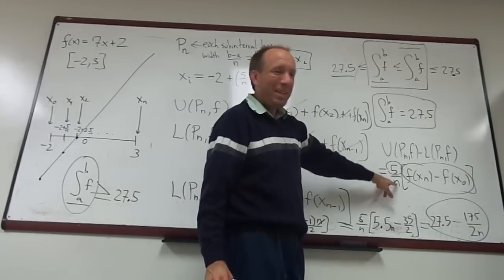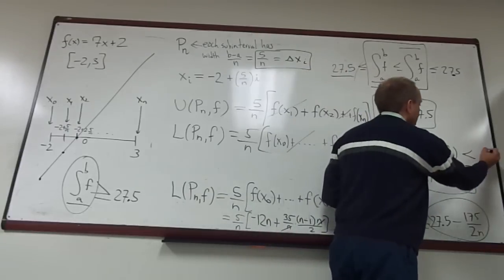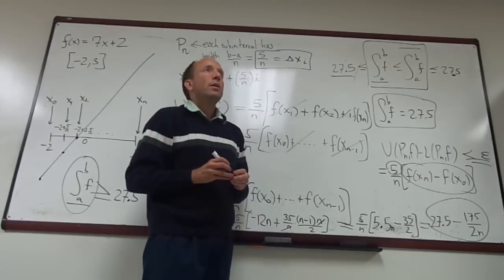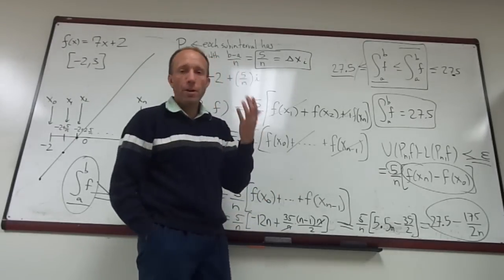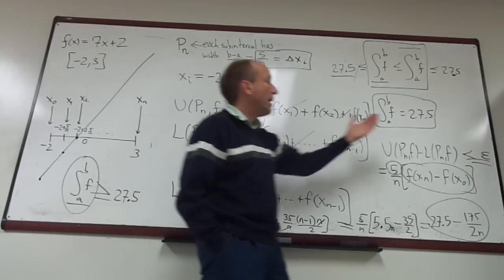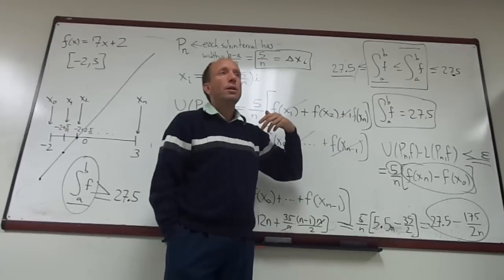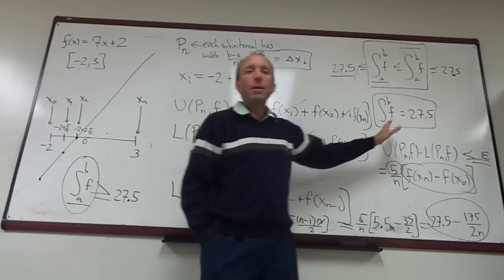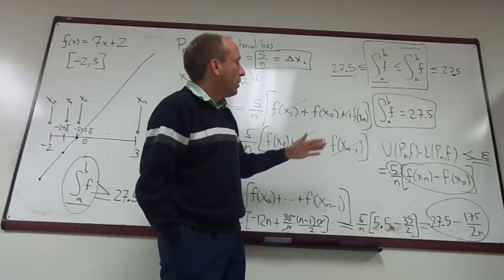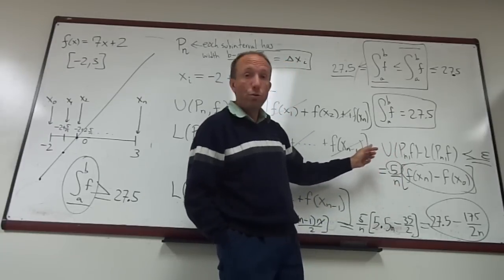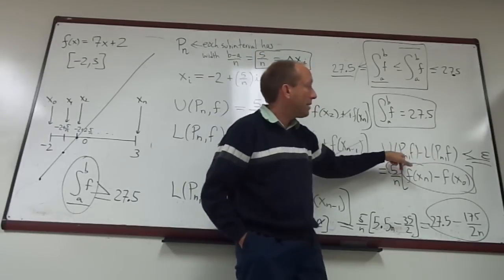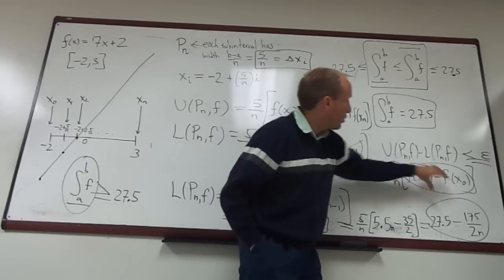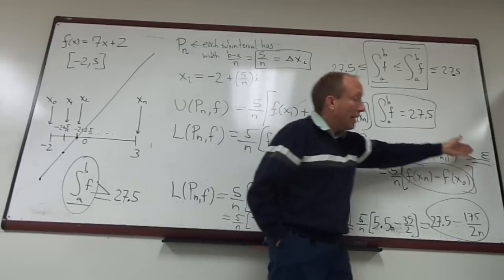So the point is, you can choose n to be large enough to make this expression less than epsilon, if you wanted to do that. So remember with theorem 6.2, theorem 6.2 says that a function is Riemann integrable if every epsilon greater than zero has some partition such that U P f minus L P f is less than epsilon. Well, what this shows in this example is that is true, because you can just simply use the P sub n partition for n sufficiently large to make this expression, which is just a constant over n, less than epsilon.